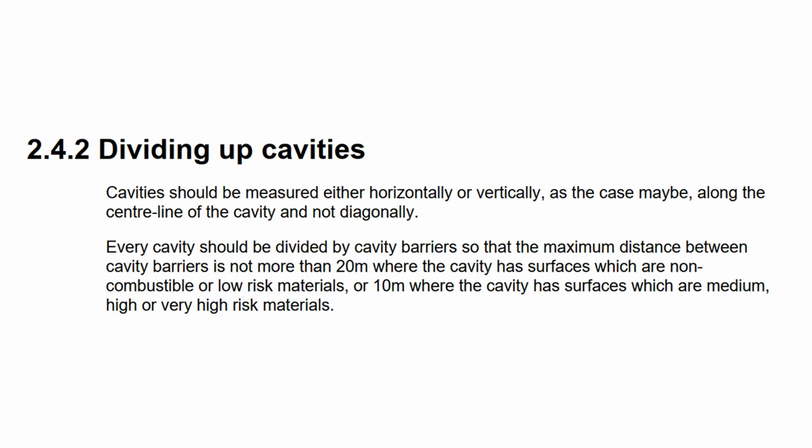The regulations also state how we should divide up cavities. We can't just have one great big cavity. If a building's wall is greater than 20 metres where all surfaces are non-combustible, or 10 metres where there are high-risk materials such as timber frame, we would have to start dividing up cavities. So it's not enough just to say one house is one cavity compartment — we might have to start dividing them up individually.